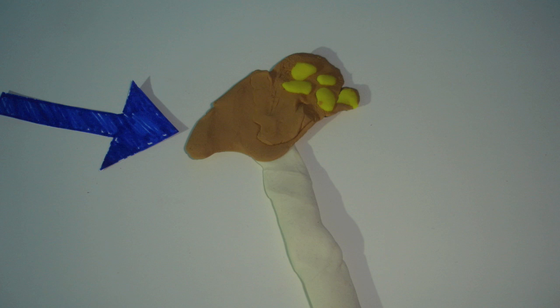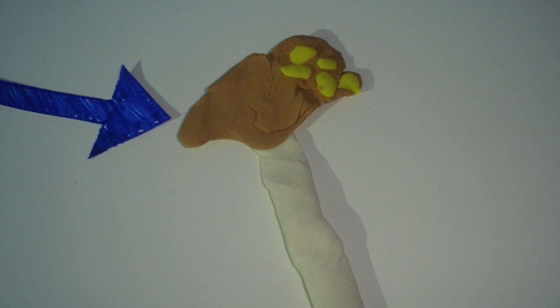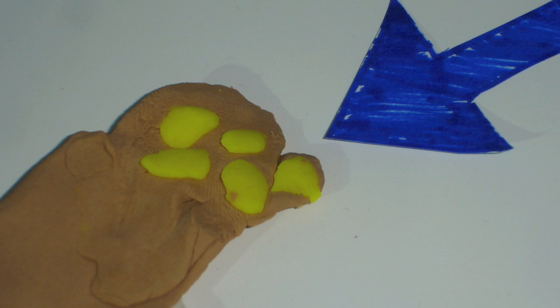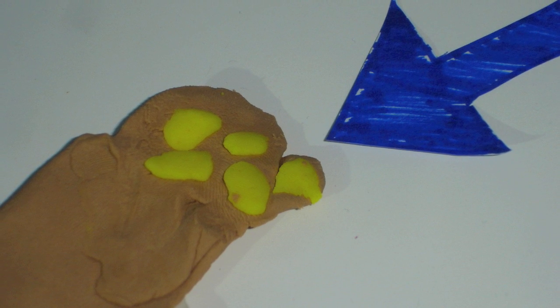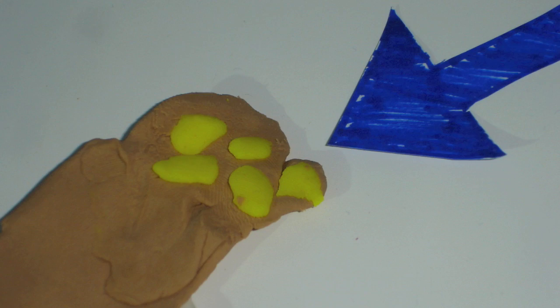This is the anther. It's the structure that produces pollen and also keeps the pollen in place. This is pollen. It contains a germ nucleus and a pollen tube nucleus.